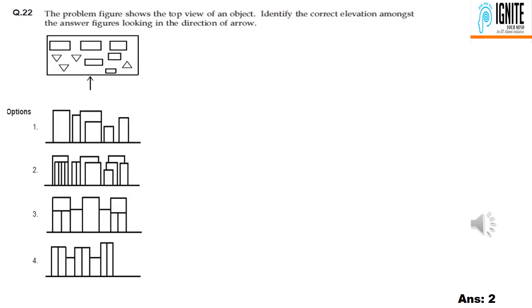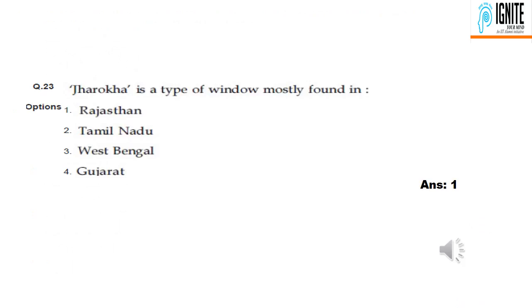Question 22 involves a front view, best option is option 2. Question 23: Jaroka is a type of window, mostly found in Rajasthan.